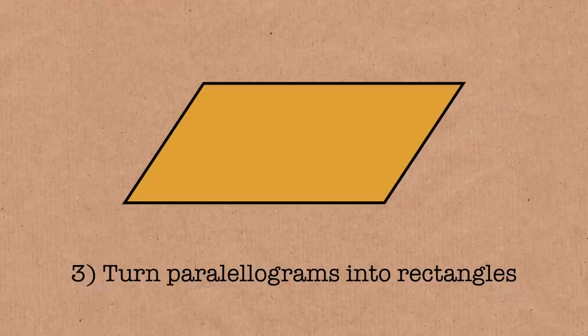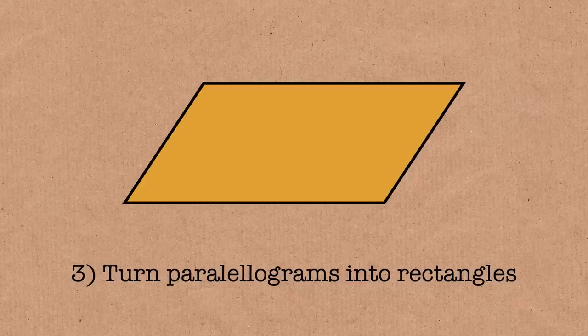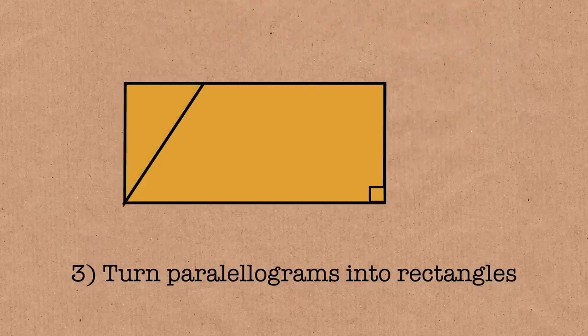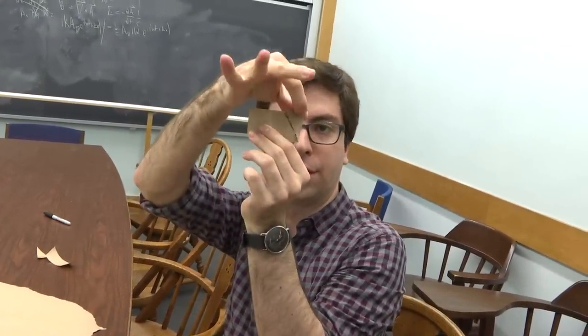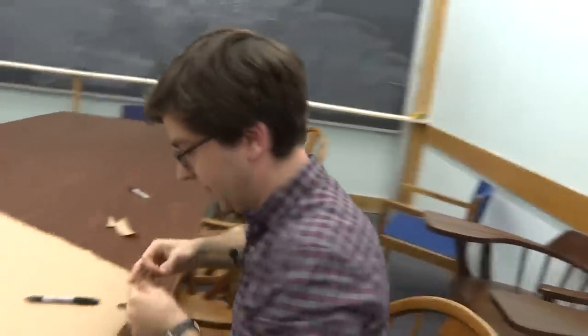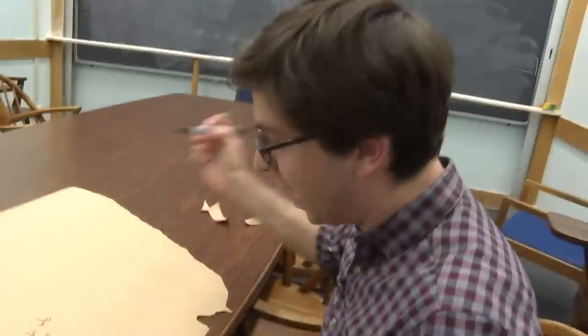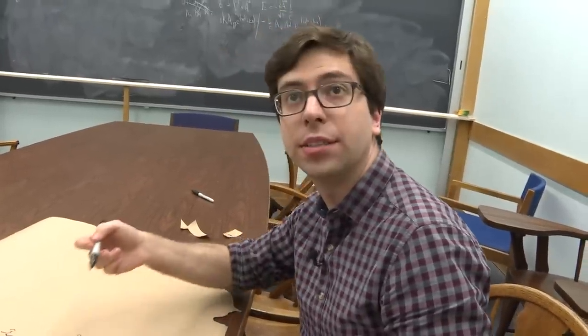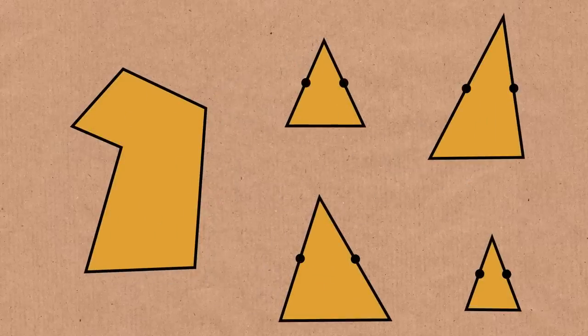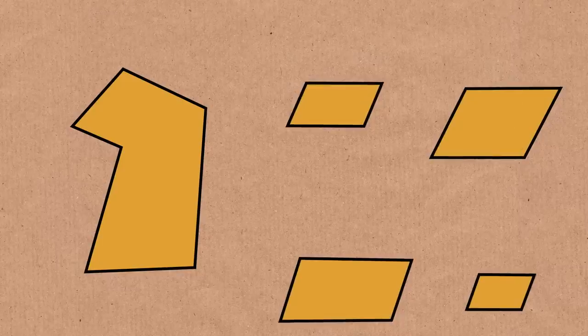Now we're going to turn parallelograms into rectangles. So here, what do you do? You just drop a perpendicular like this and then move this triangle over here. Here's my parallelogram and I'm going to turn it into a rectangle. So now we have some rectangle which has the same area as our original polygon. We do this for every triangle we got and we get a bunch of rectangles. And now we're going to make it into a 1 by A rectangle.